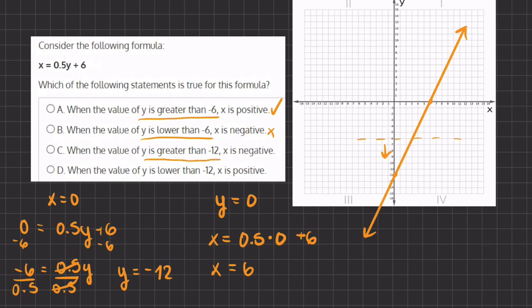When the value of y is greater than negative 12, x is negative. Let's take a look at y equals negative 12. And when y is greater than negative 12, x is in the positive realm.